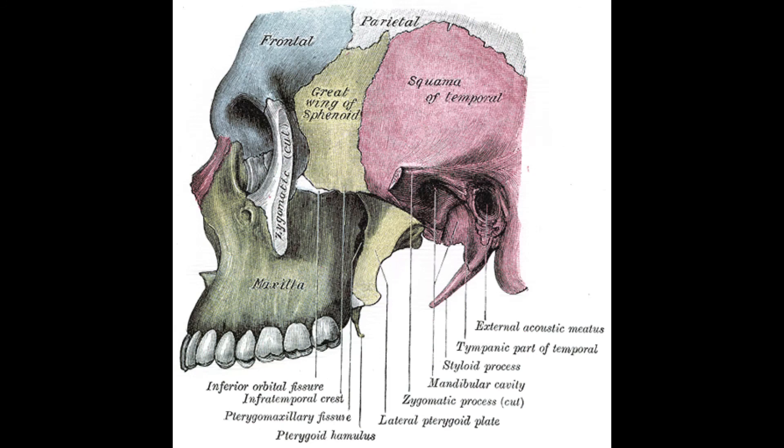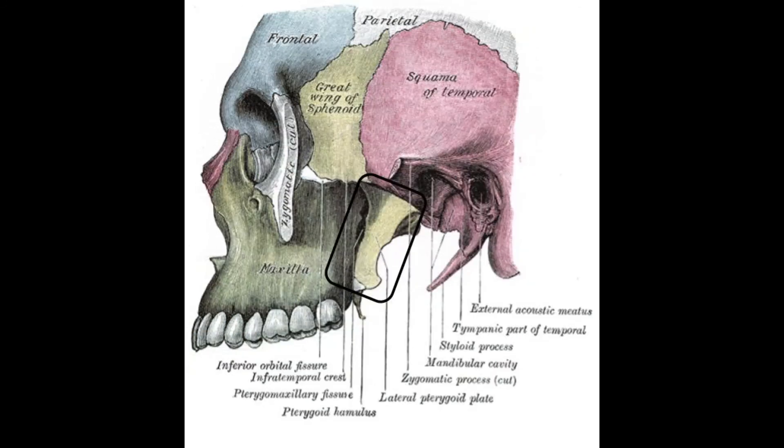This is another lateral view of the bones of the skull. We can clearly see the maxilla, sphenoid, and temporal bone. In this image they've cut off the zygomatic arch so we can see deeper. If we look at the bottom part of the sphenoid, we can see the lateral pterygoid plate of the sphenoid bone, which serves as an attachment for the pterygoid muscles.